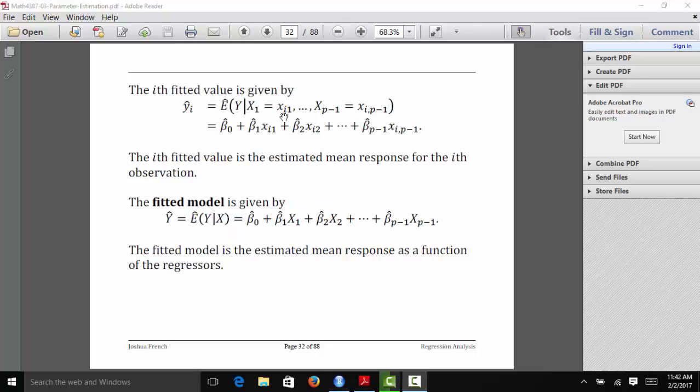The i-th fitted value is obtained by simply taking the estimated regression coefficients and multiplying them by the regressor values for the i-th observation. This has the same general definition that we saw earlier in this chapter. I want to emphasize that the i-th fitted value is the estimated mean response for the i-th observation. That's why I wrote it in this format. E stands for expected value, so it's the estimated expected value or the estimated mean response given these values of our regressor variables.